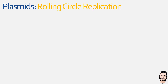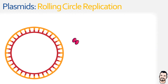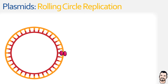First, a plasmid-encoded initiator protein known as RepA seeks out the site of origin on the plasmid — essentially an area the protein recognises as where replication should begin. Once RepA has identified the origin site and bound to the double-stranded DNA, it nicks one of the sugar-phosphate backbones and attaches to the exposed 5' phosphate group.